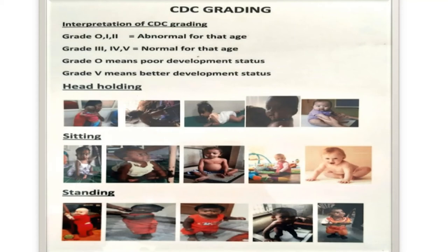Please use the visual chart. If the child's development falls in grade 0, 1, and 2, the child's development is definitely abnormal for that particular age. If the child's developmental milestones in head holding, sitting, and standing fall in grade 3, 4, and 5, it is normal for that age.